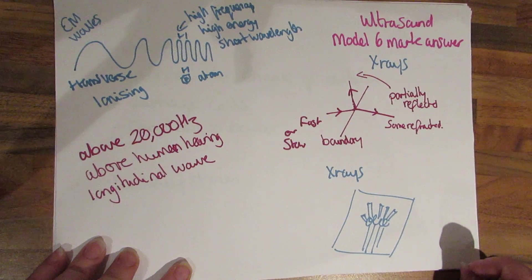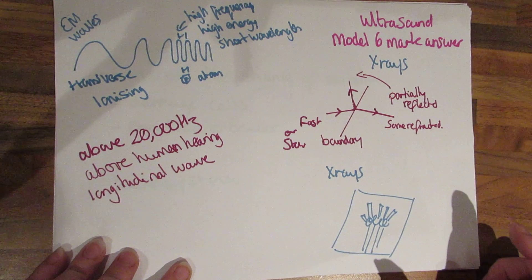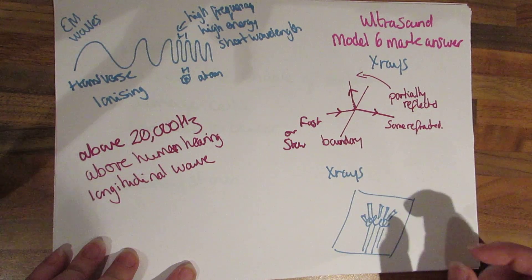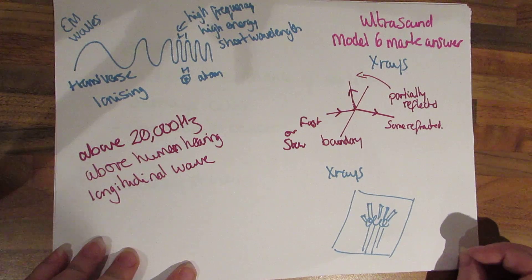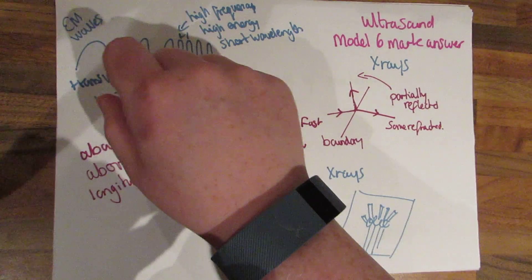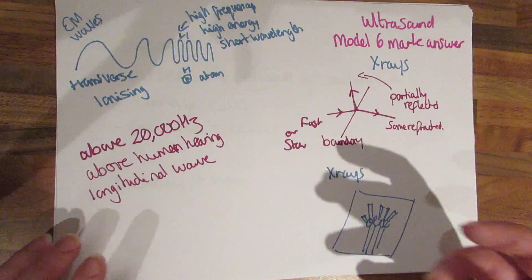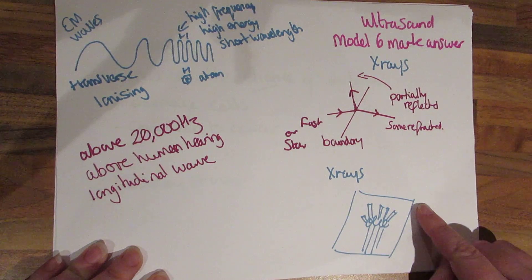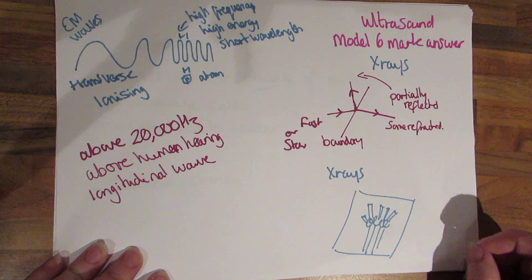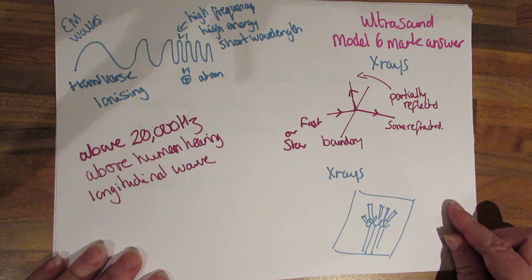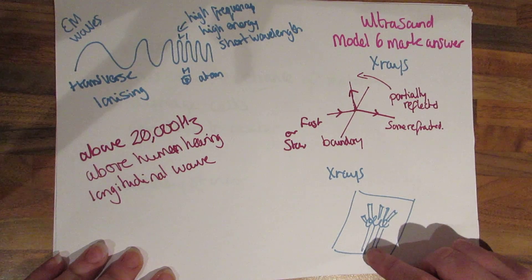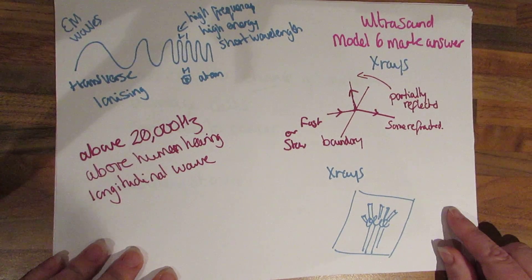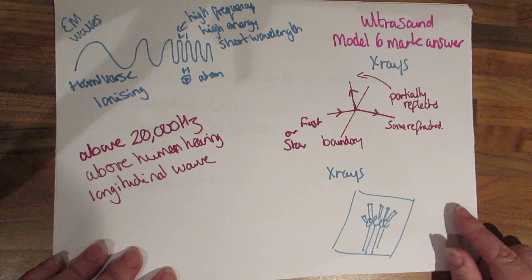Now x-rays are going to be used for looking at potential broken bones. The dense material, the bone, actually stops the x-rays getting through. Whereas the fleshy bits, the muscles, allow the x-ray to go through so that on the film or charge coupled device in digital x-ray machines these days you get an image where the bones look white and everything passing through the skin, the tissue, the muscle looks black.